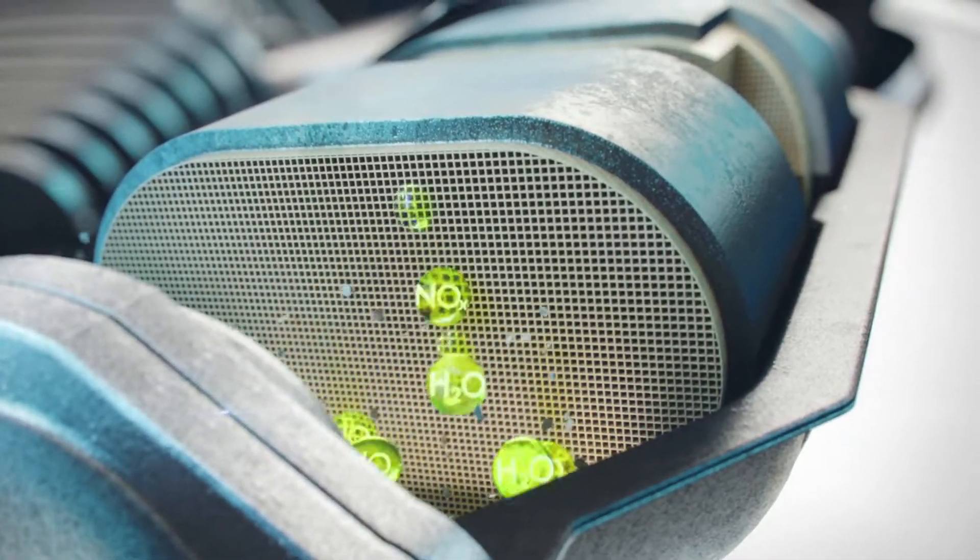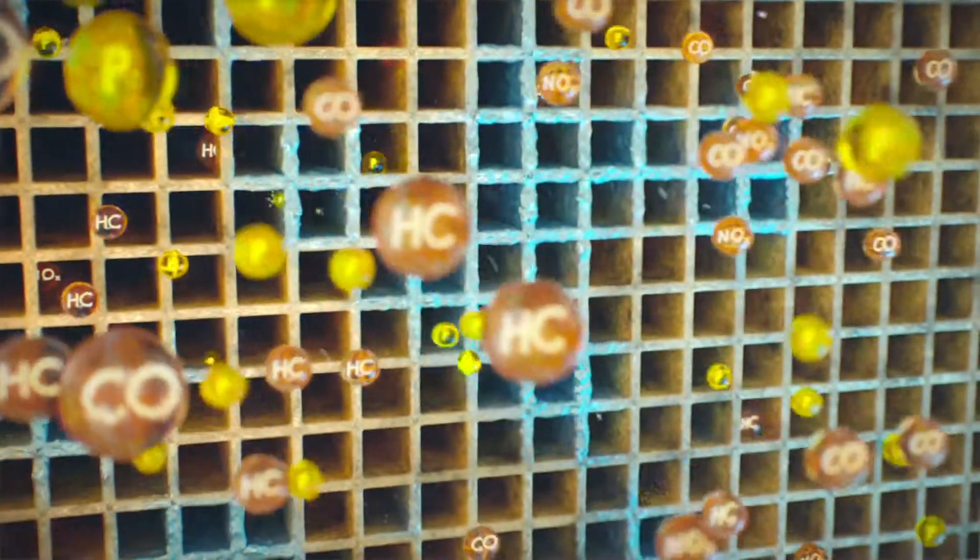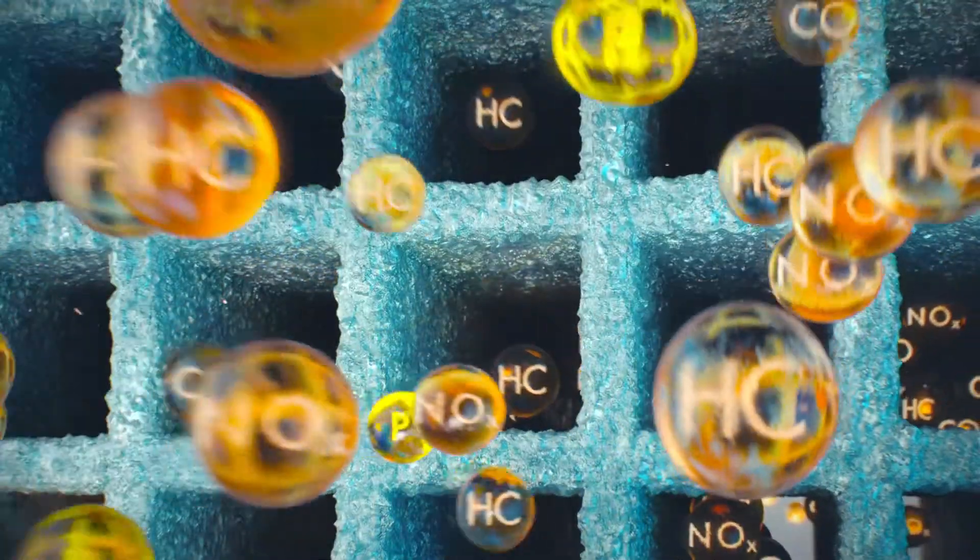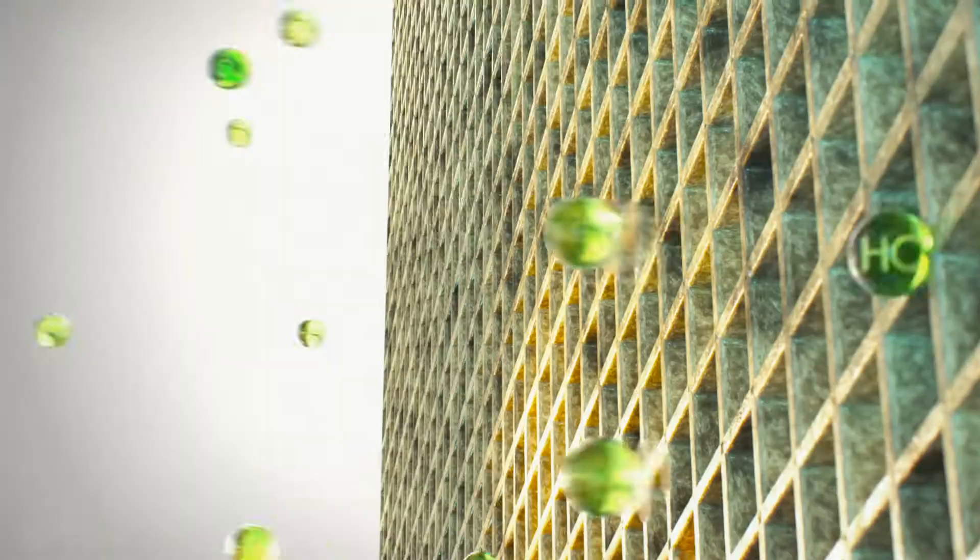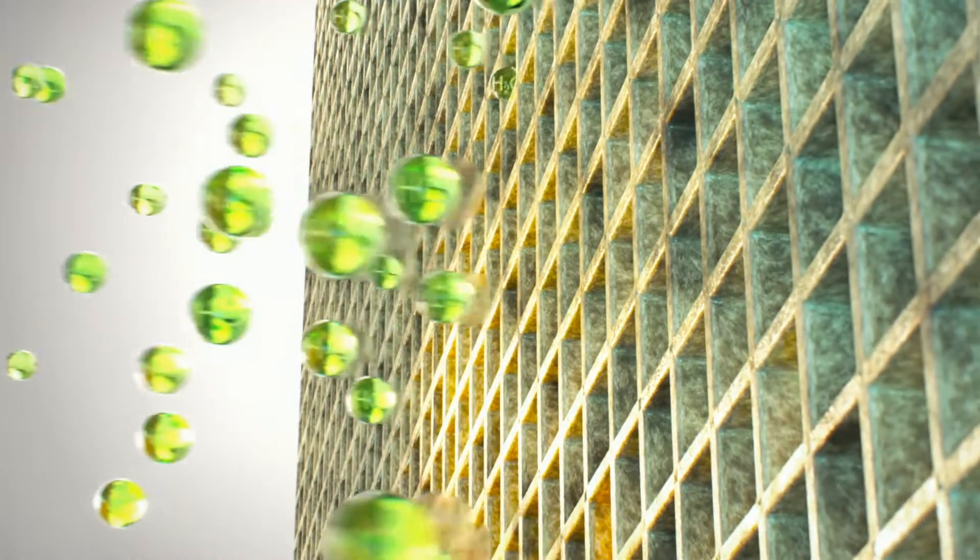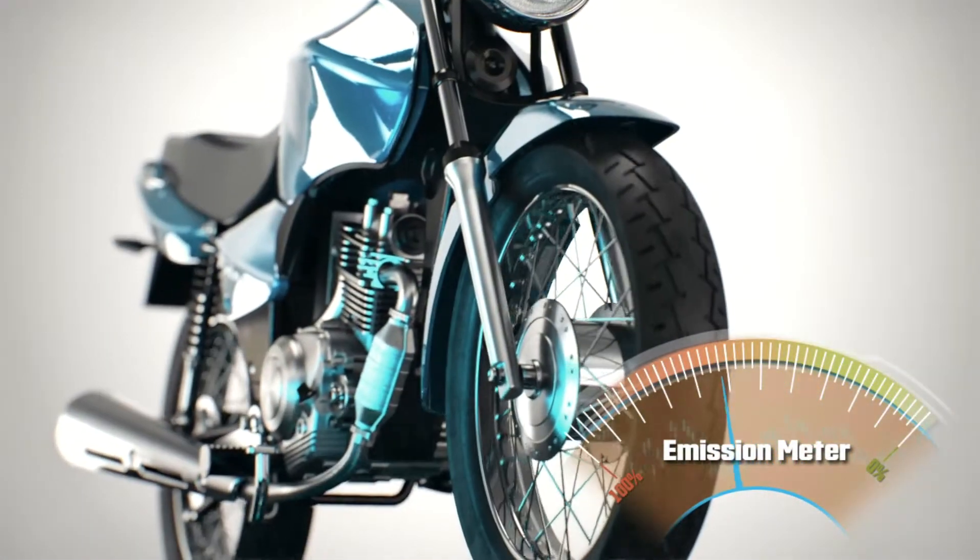The desired reactions are driven by activated precious metals, which are situated along the washcoat of the catalyst. Phosphorus coming from motorcycle engine oil can act as a poison to the precious metal active sites in the exhaust catalyst, thereby rendering it less effective over time.